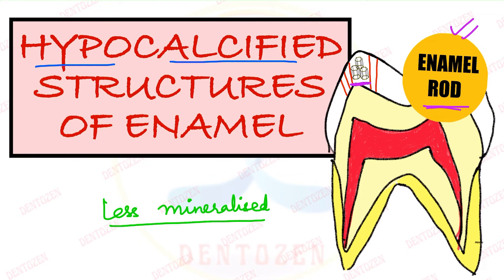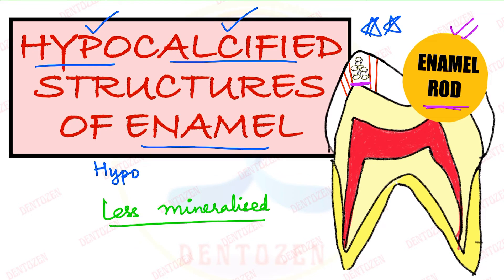Hypo means less, calcified means their calcium content is less, and that is the topic for today's video. These structures are also known as hypomineralized structures of enamel. So for your theory exam, you can get a long question as 'hypocalcified structures of enamel' or 'what are the hypomineralized structures of enamel.'